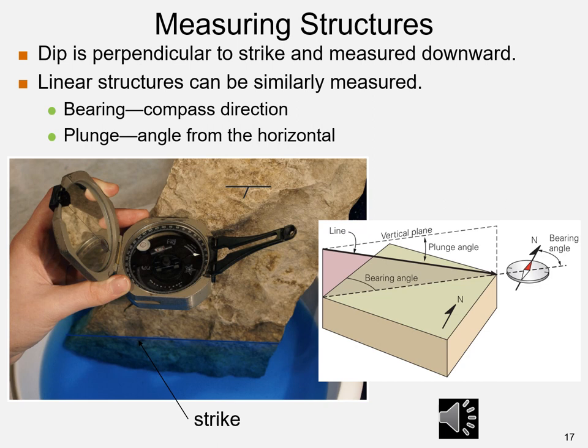On the right is a three-dimensional diagram showing the definitions of plunge and bearing. The bearing angle is the angle that the projection of the line on the horizontal plane makes to due north. The plunge angle is the angle between the line and the horizontal in the vertical plane that contains the line.